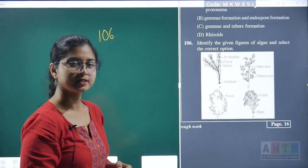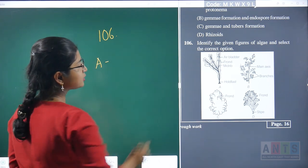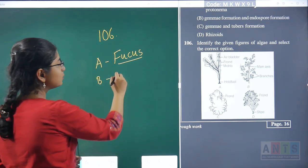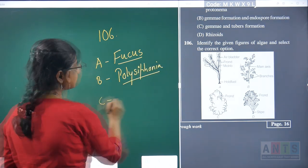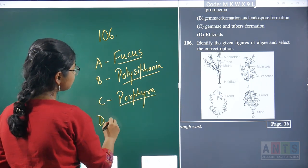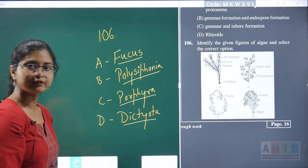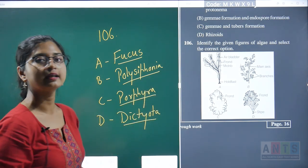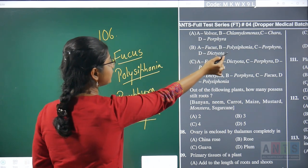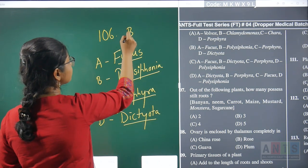Question 106 is a diagram-based question to identify organisms. Figure A is Fucus. Figure B is a red alga, specifically Polysiphonia. Figure C is another red alga, Porphyra. Figure D is a brown alga, Dictyota. All four diagrams are directly from your NCERT, chapter Plant Kingdom. So the correct option with A-Fucus, B-Polysiphonia, C-Porphyra, D-Dictyota is option B.